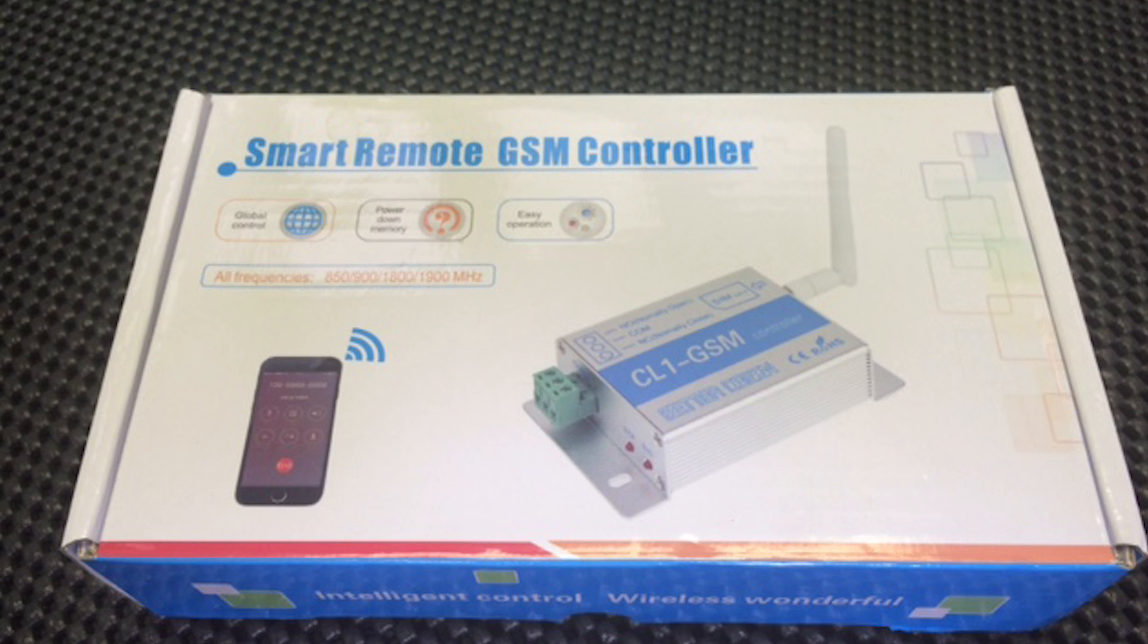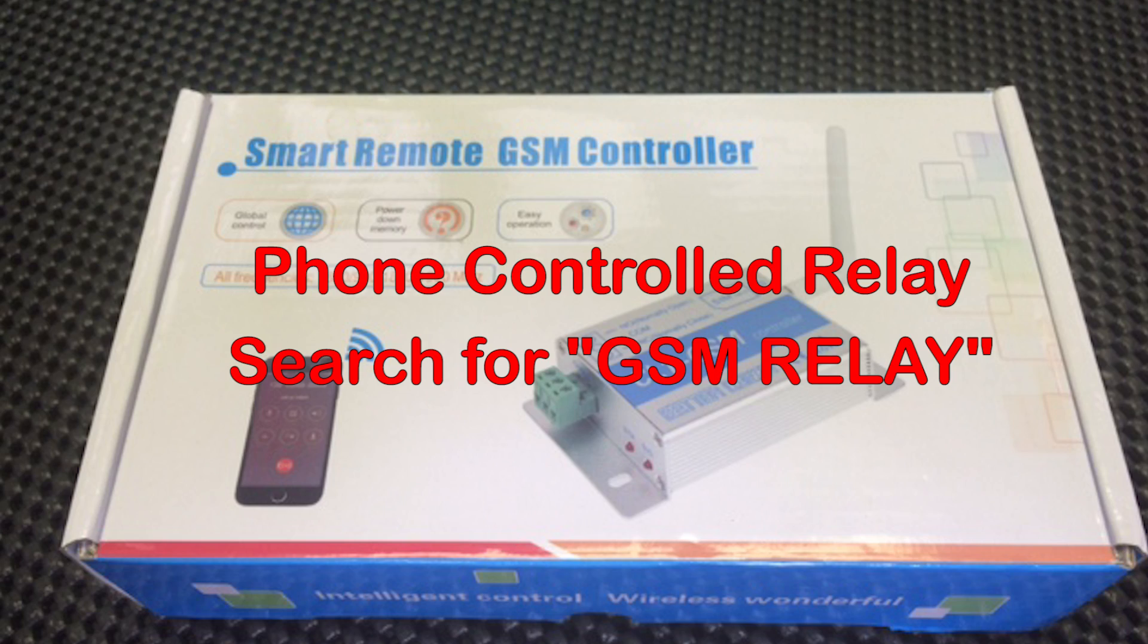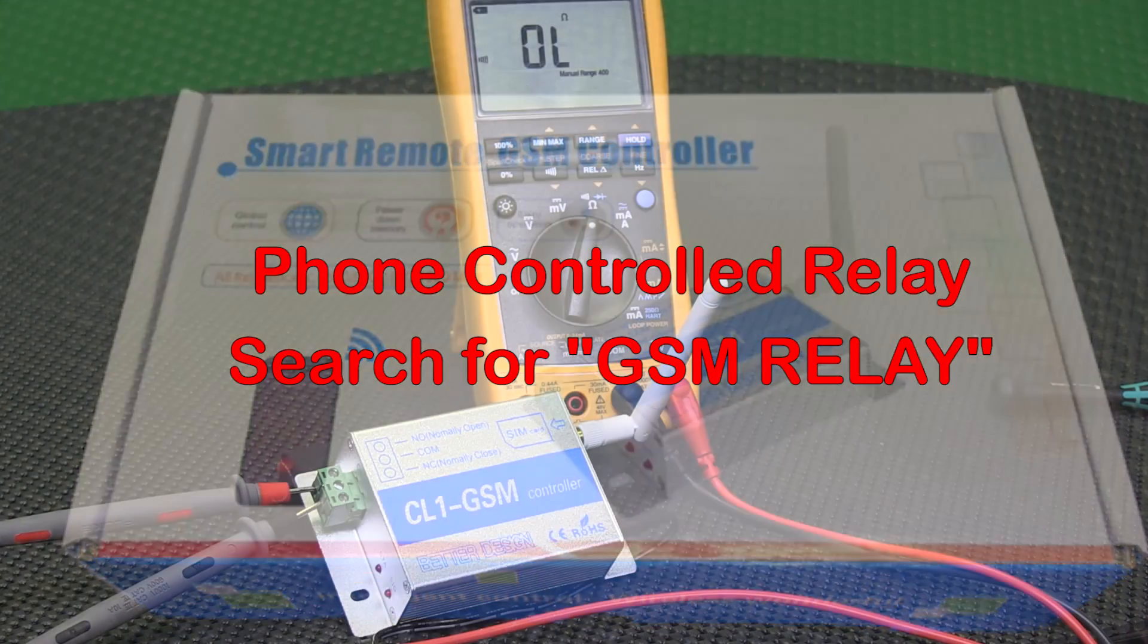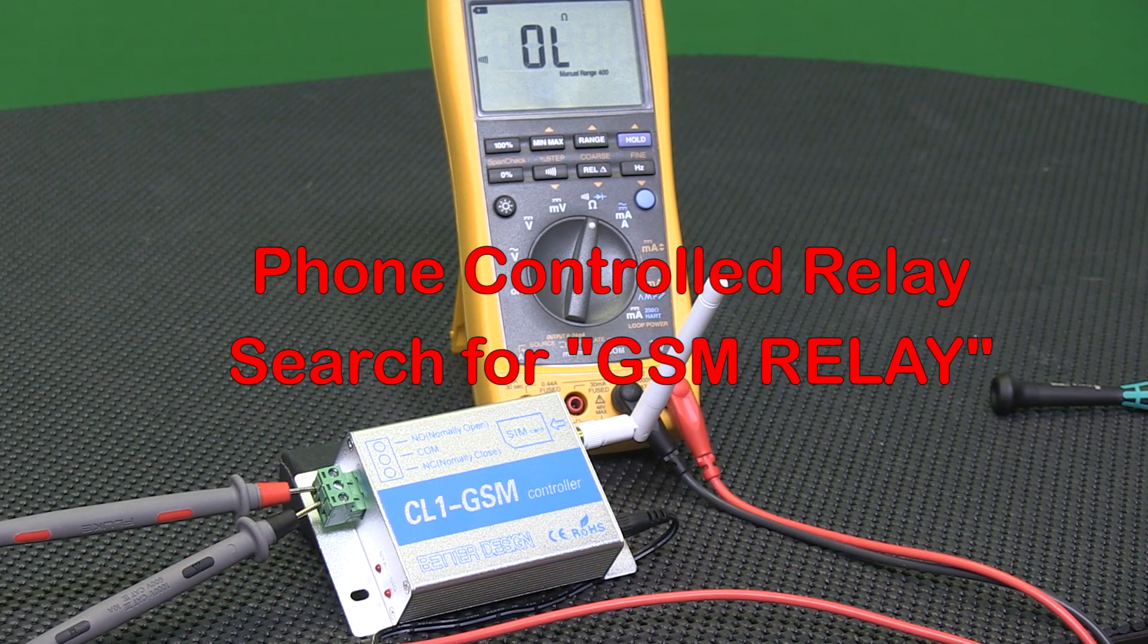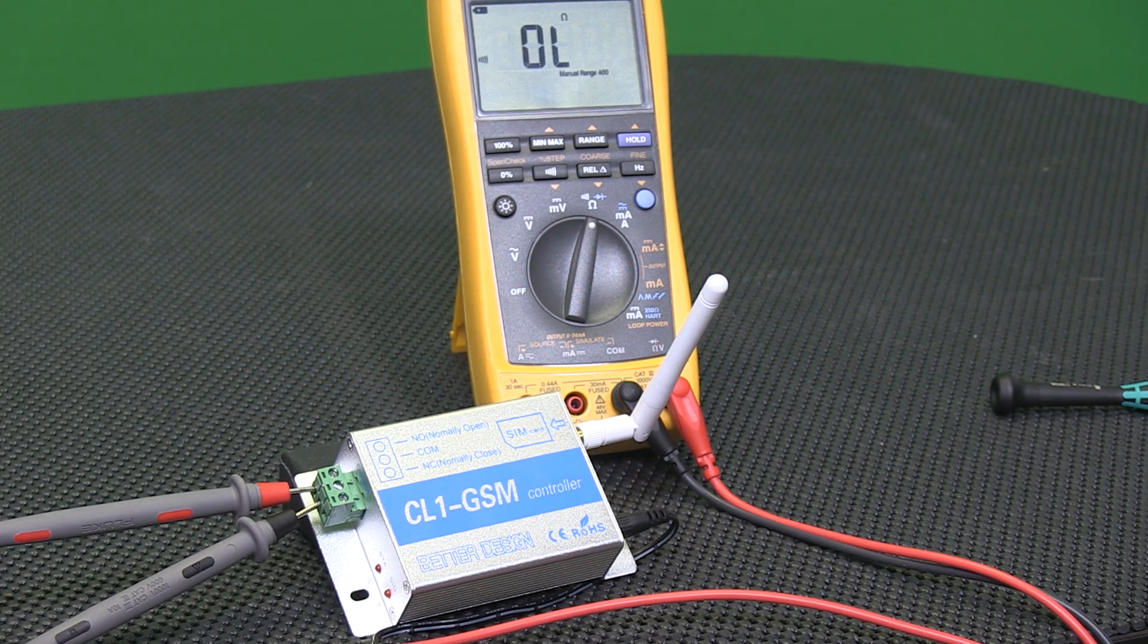Okay, this is a quick video on the CL1-GSM controller that you can control with your cell phone. You can find these on the web fairly cheap, around 30 to 40 bucks on Amazon and some other sites.